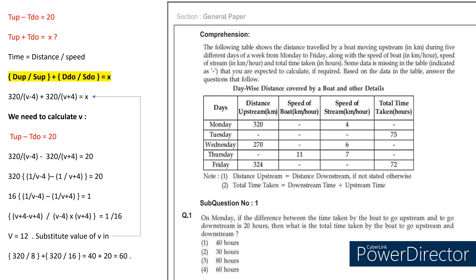To calculate X, we first need V, the speed of the boat. We use the first equation: T_upstream minus T_downstream equals 20, converting it to distance-by-speed form. After calculating, you get V equals 12. Substituting into the equation: 320 divided by (V minus 4) plus 320 divided by (V plus 4) equals X. With V equals 12, you substitute and calculate. The answer will be around 60 hours.